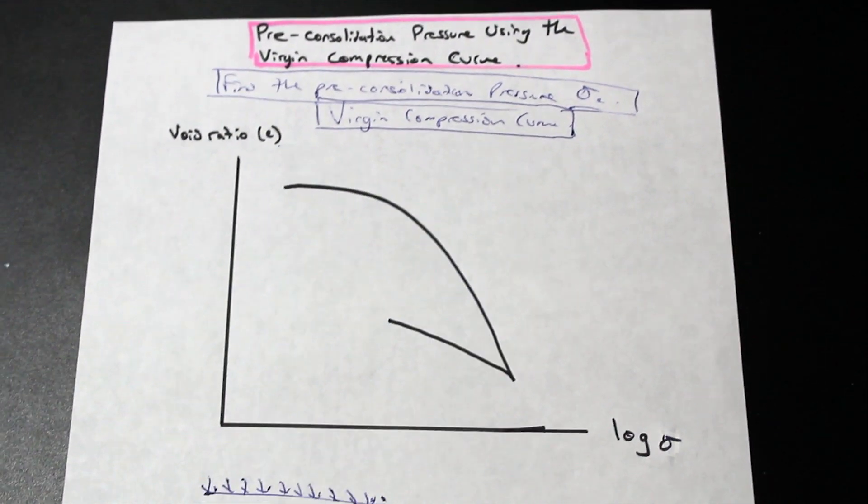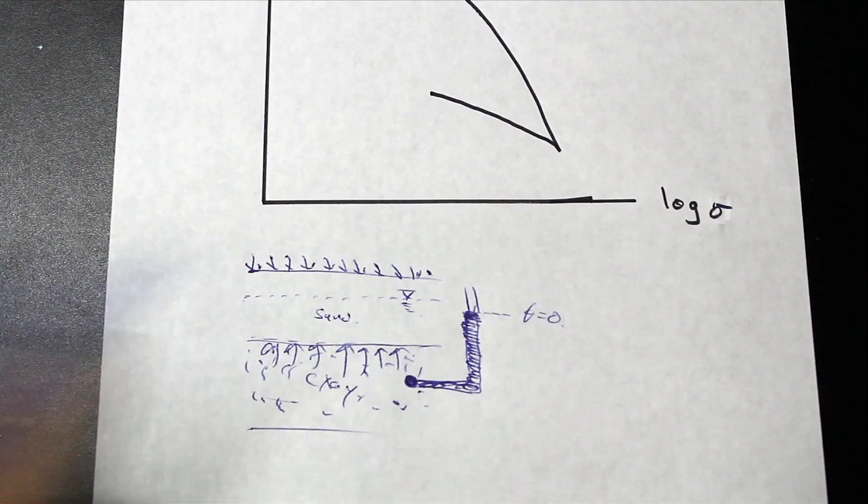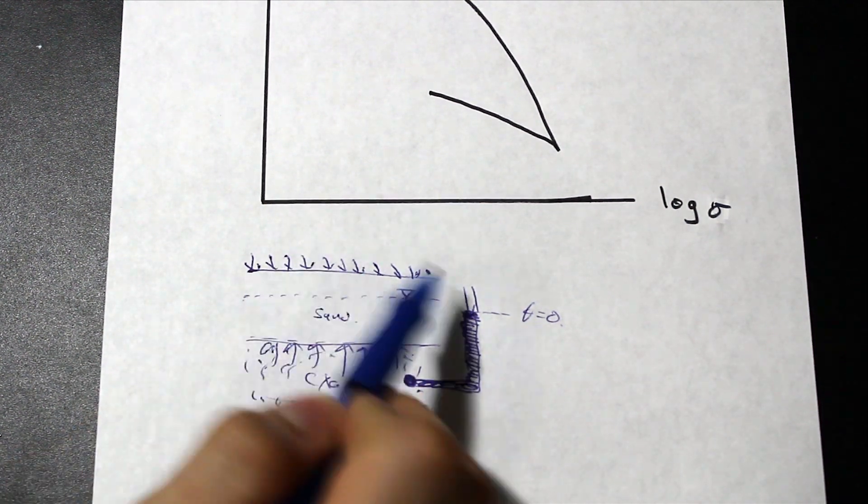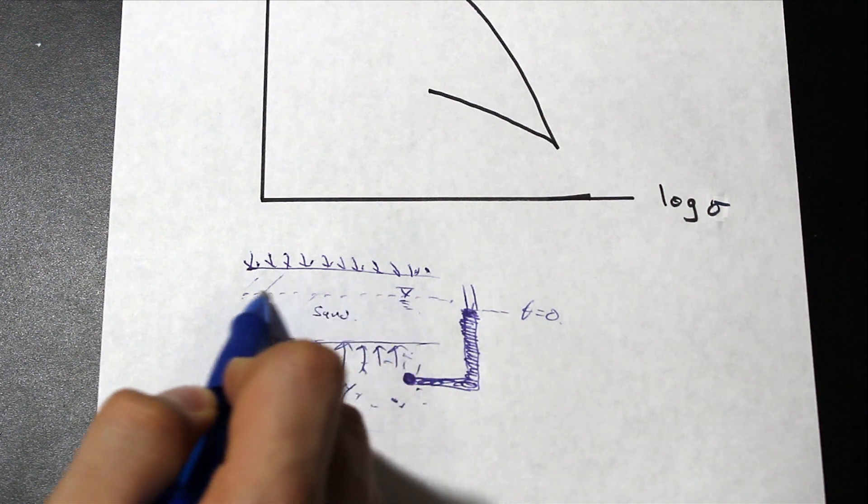I just kind of drew a little diagram down here for you. What that exactly looks like is you have a loading. For example, you could build like a foundation, a concrete foundation, and on top, right below it, you may have a sand. Here's our water table here.